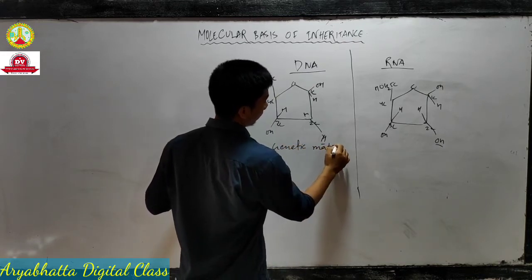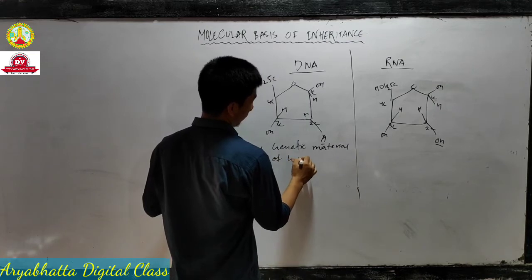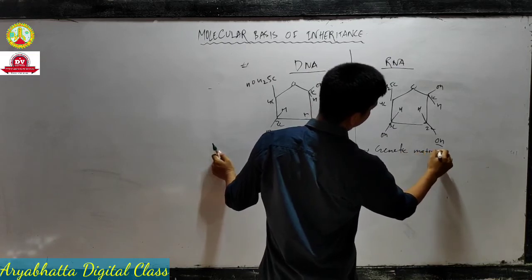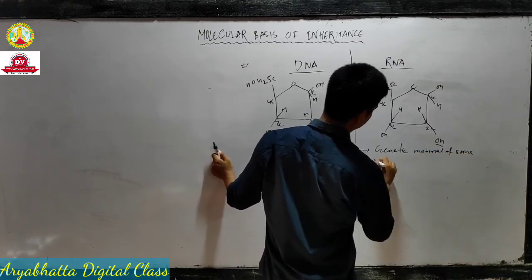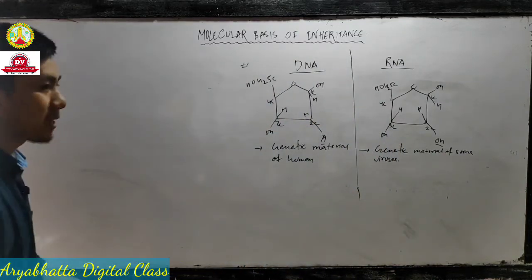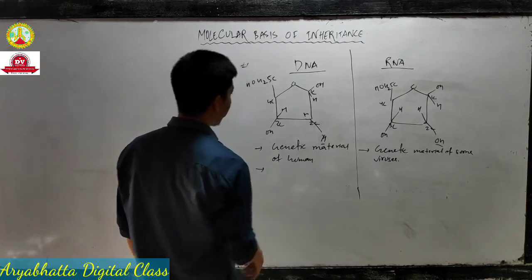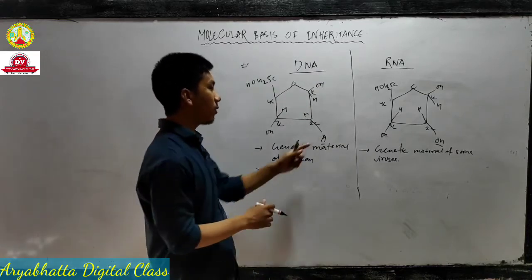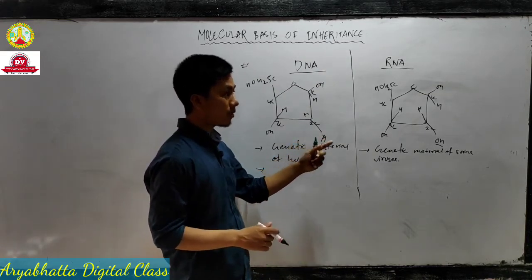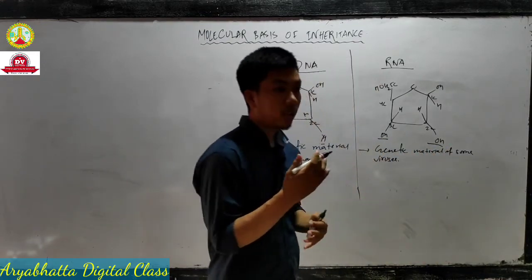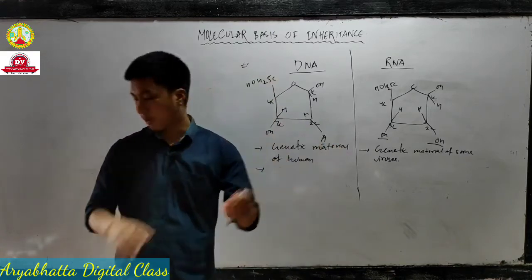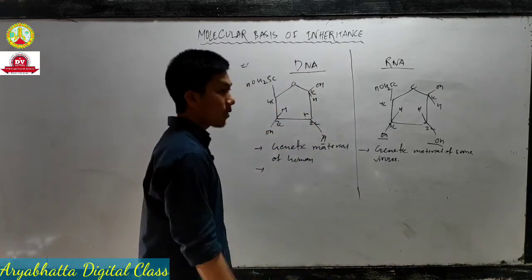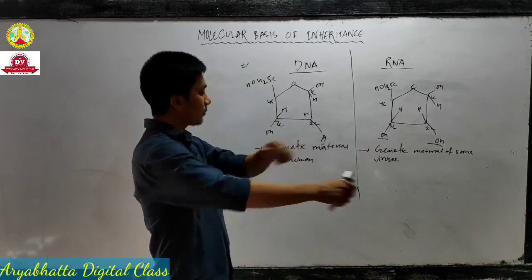RNA is the genetic material of some viruses. At the 2' carbon number, in DNA there is only one H, but in RNA there are two OH groups - meaning it has two free functional groups. DNA has only one free OH group - the other position is just H. So DNA has fewer functional groups.